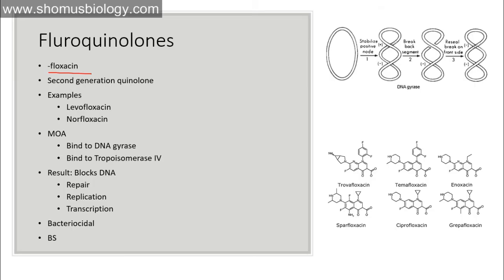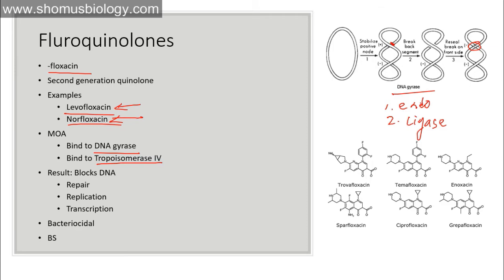Fluoroquinolones are second generation quinolones; examples include ciprofloxacin, levofloxacin, and norfloxacin. Norfloxacin is mostly used in enteric infections. Their mode of action involves binding to DNA gyrase and also to topoisomerase 4. Topoisomerase 4 binds to double-stranded DNA, cleaves both strands, passes the other DNA strand through, and then religates it, relieving supercoiling. Fluoroquinolones like norfloxacin destroy the ligase function of gyrase, converting it to only an endonuclease.